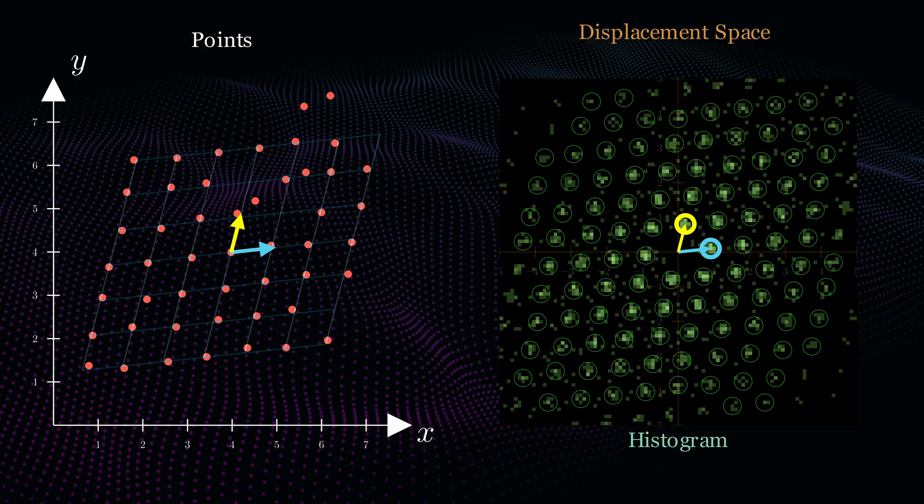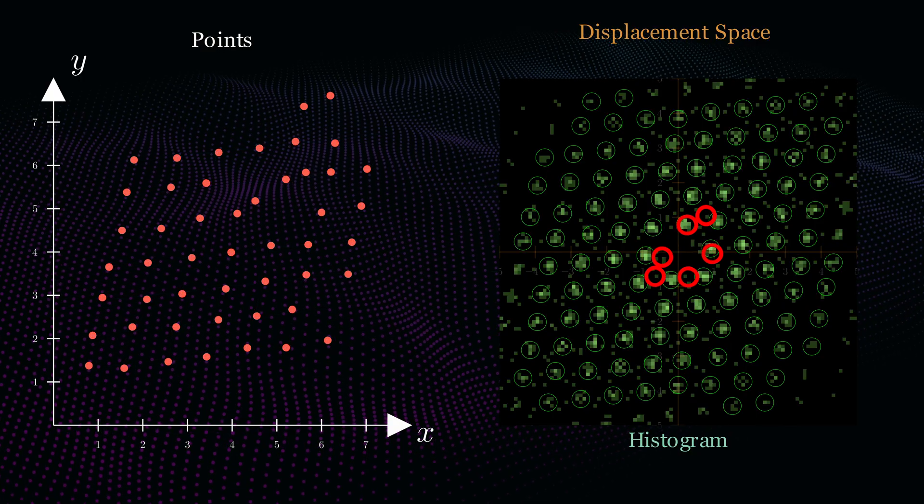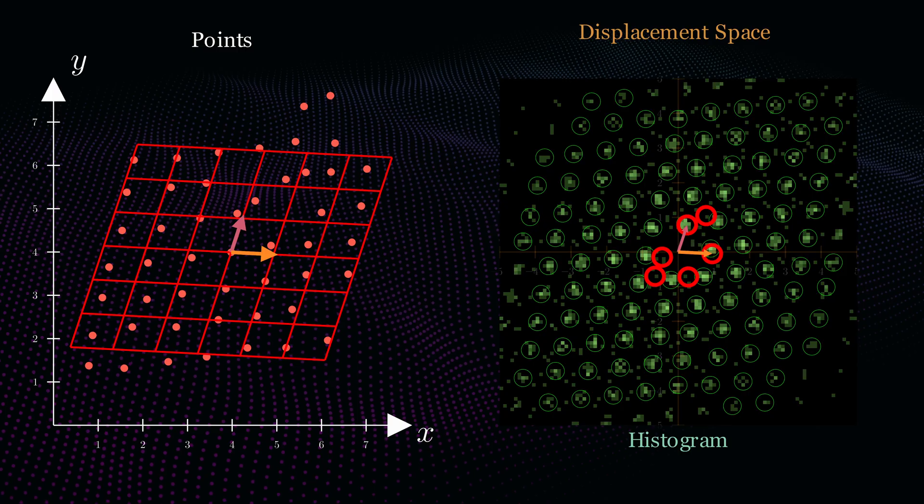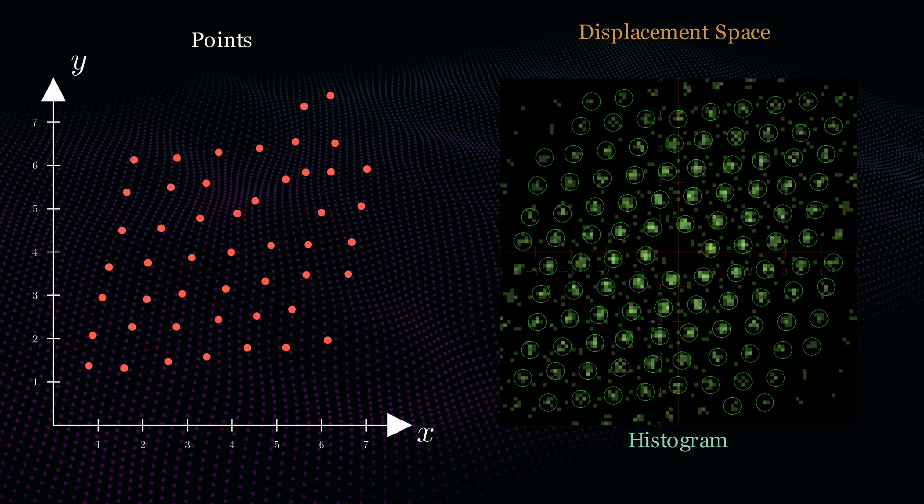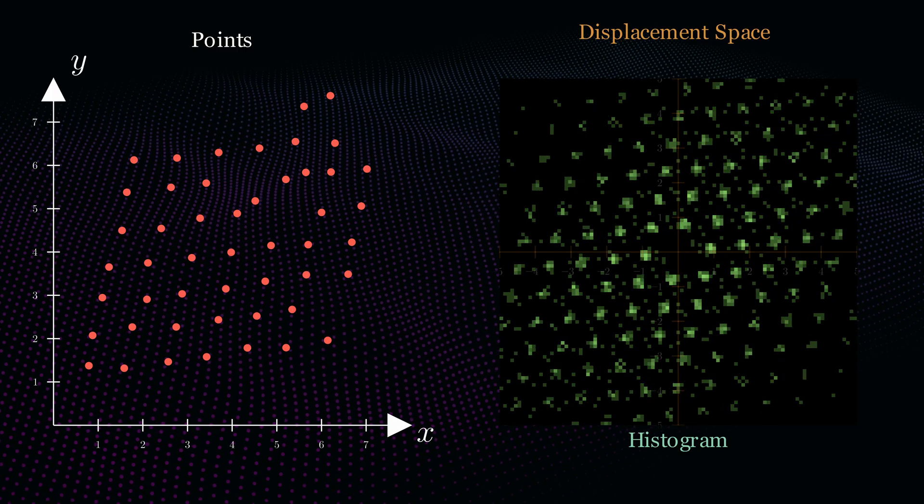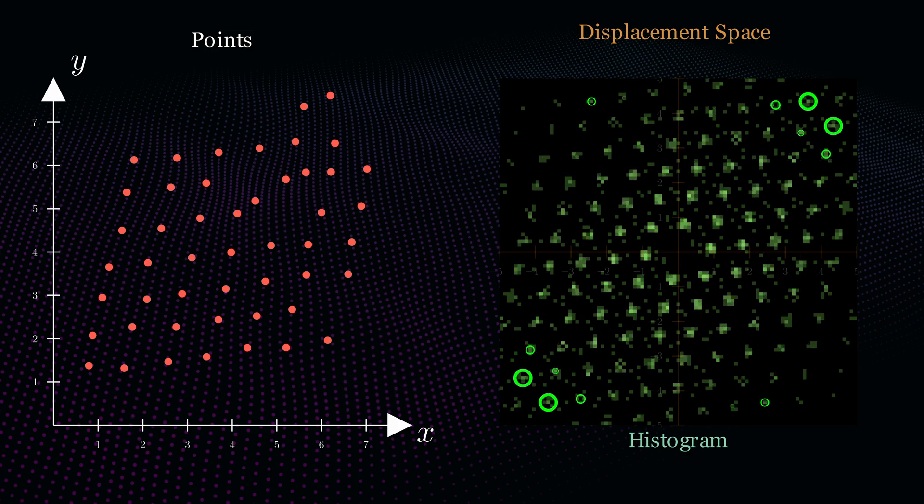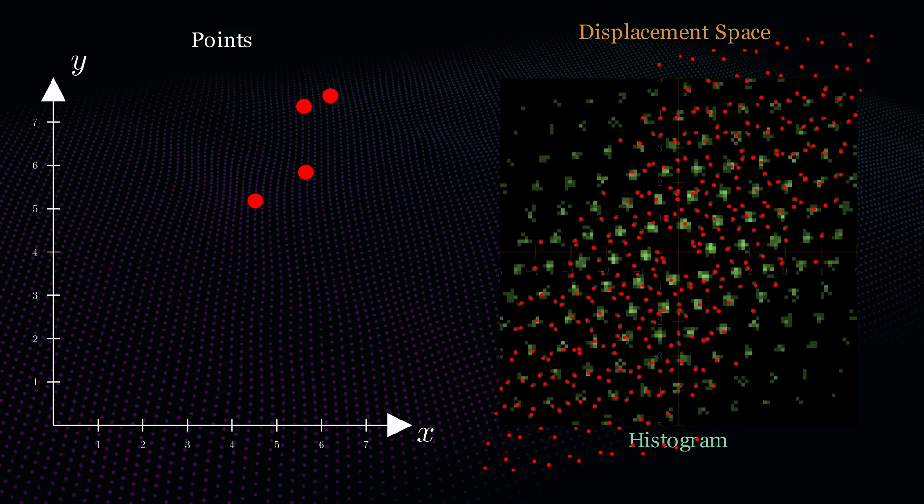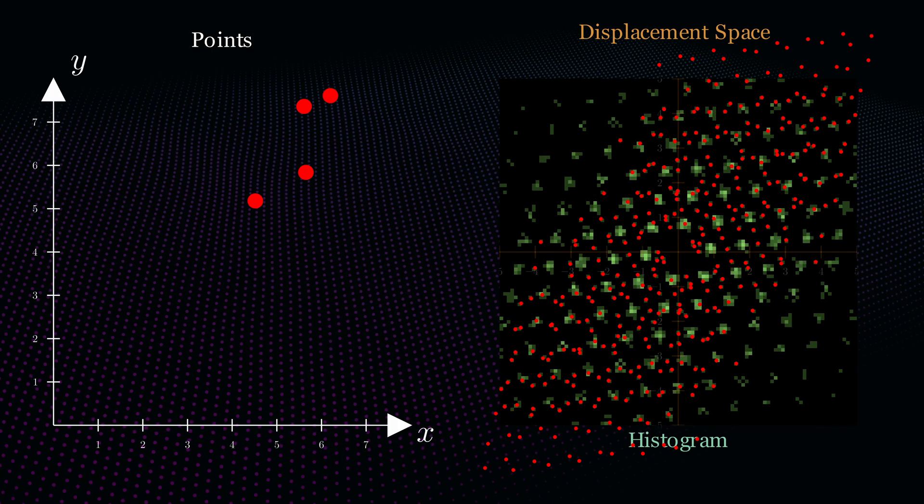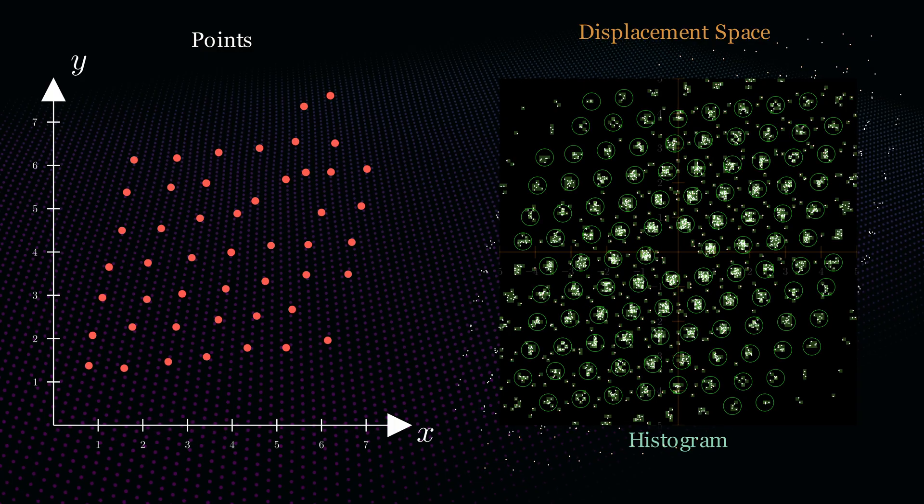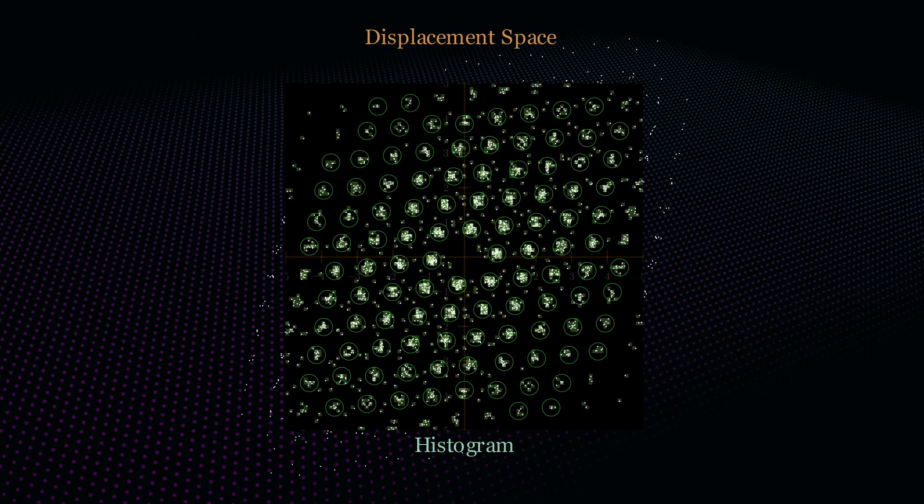But if we only did this, noise and missing points might cause us to choose the wrong peaks. There's something else interesting about this displacement space, though. These clusters seem to repeat radially outwards from the center, but the bad points don't have this repeating property. The random clutter creates random displacements. The true grid pattern has a unique fingerprint that noise can't replicate.